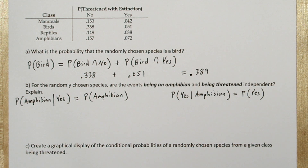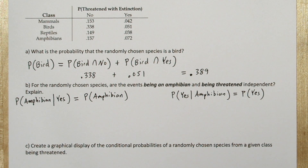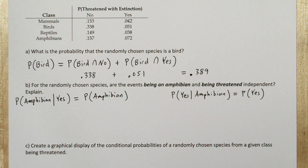We also have to check it the other way: that the probability a species is threatened given it's an amphibian is the same as the probability of the species being threatened. If this equation is true, knowing the species is an amphibian doesn't tell you any additional information about whether it's threatened or not — that information is irrelevant. So being an amphibian is independent of being threatened.